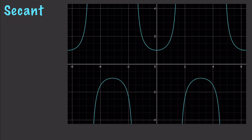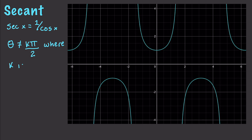This brings us to secants. A secant, as mentioned in the previous video, is just 1 over cosine. Asymptotes here lie everywhere cosine is 0. So the domain is all angles not equal to k times pi over 2, where k is odd. And you can see with the results right here in the graph that is precisely what we are seeing.